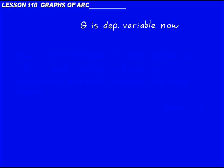Let's start with arcsine. The thing we have to remember for all of these is that theta is the dependent variable now. For example, if we had y equals sine of theta and we wanted to solve that for theta, we would say that theta is equal to sine inverse of y or arcsine of y.